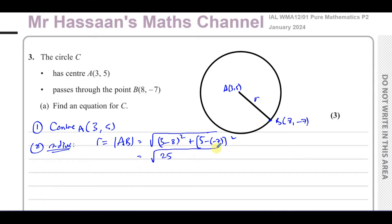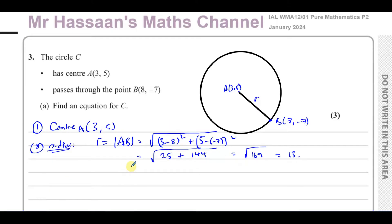So the square root of 25 plus, and that's (5 plus 7) is 12, so 12 squared which is 144. We end up with the square root of 169, which is 13. This is actually a 5-12-13 triangle. So the radius is equal to 13.